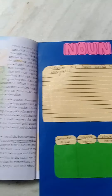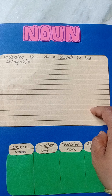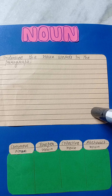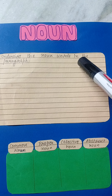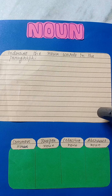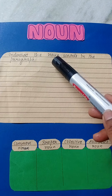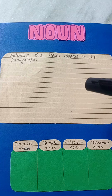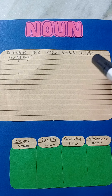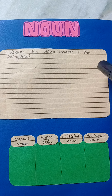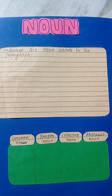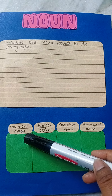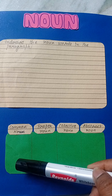Basically, you have to underline the noun words in a paragraph. As you can see, there is no paragraph written yet. You will select a paragraph and write it. You simply take a paragraph from your book.